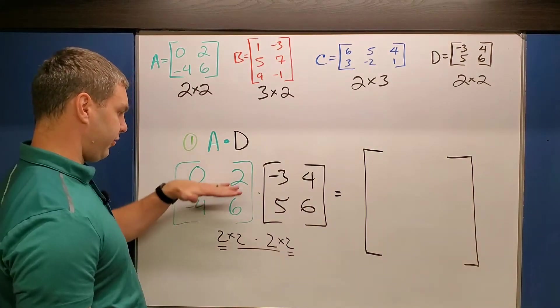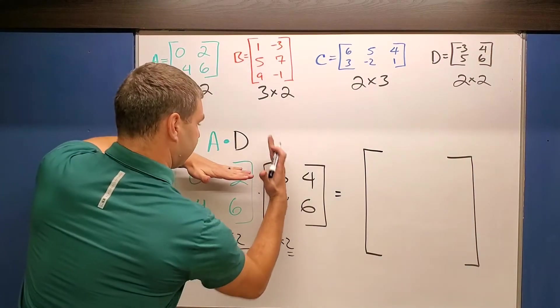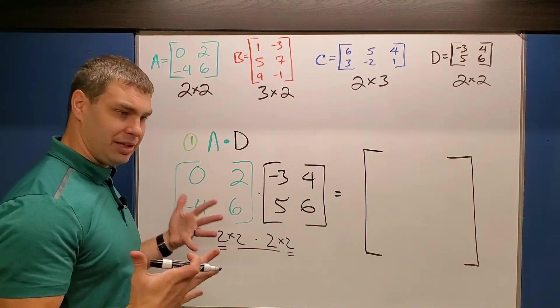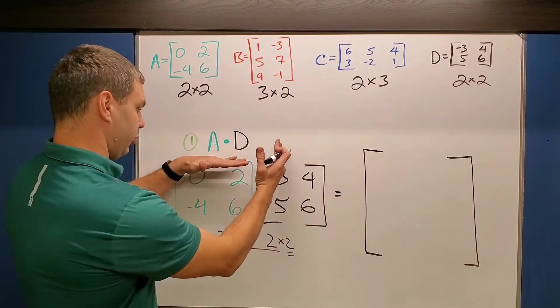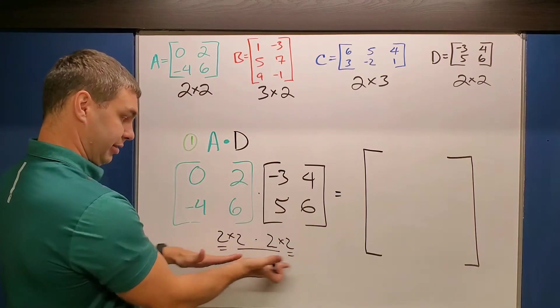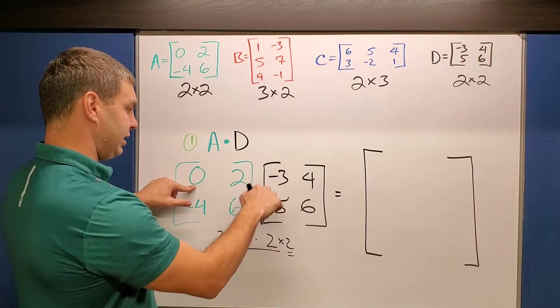The way we do this, the way we multiply is we're going to take our first row in our first matrix times our first column in our second matrix. And we have to put together in a special way. So we're going to multiply these first elements. That's why we need the dimensions to match up. So we can take 0 times -3, which is 0.